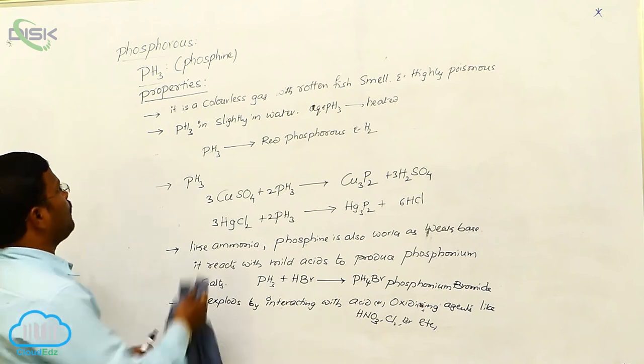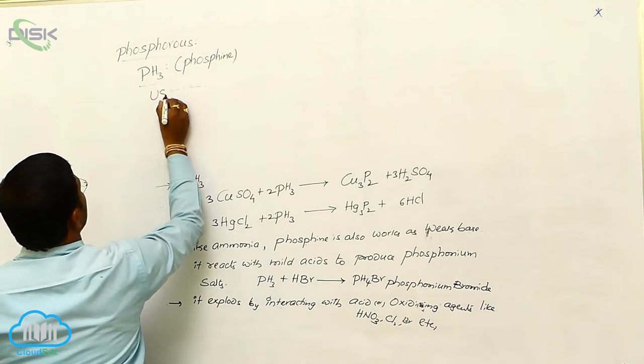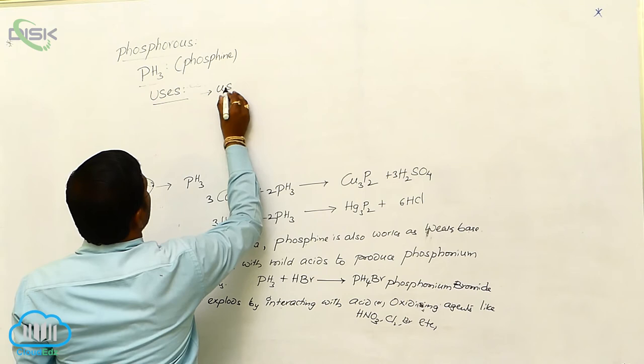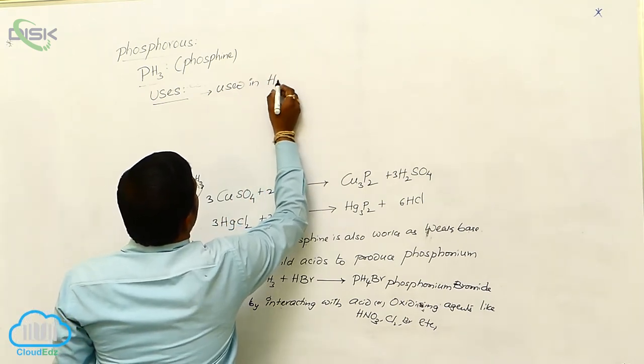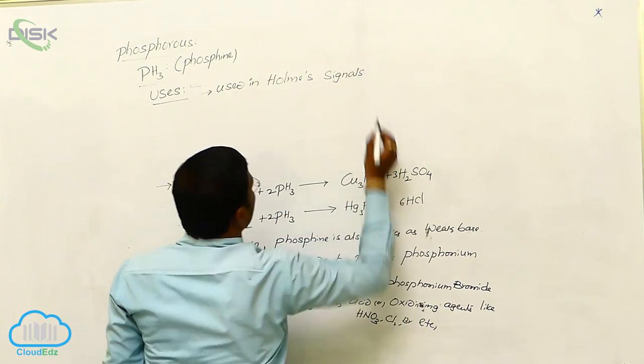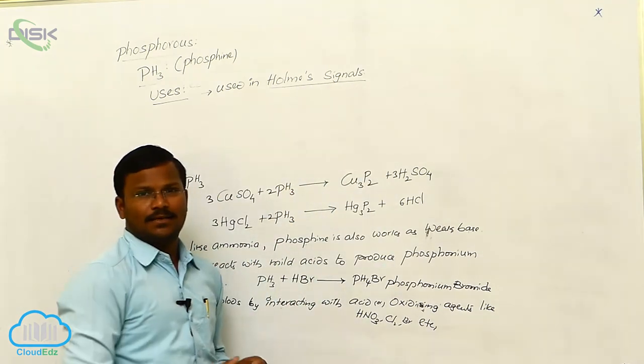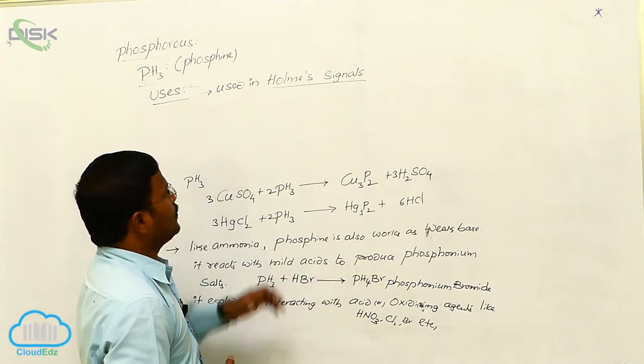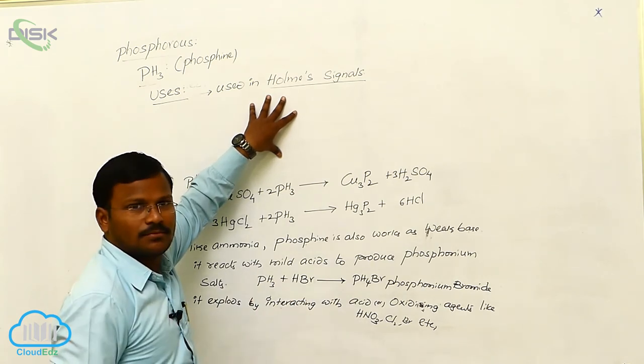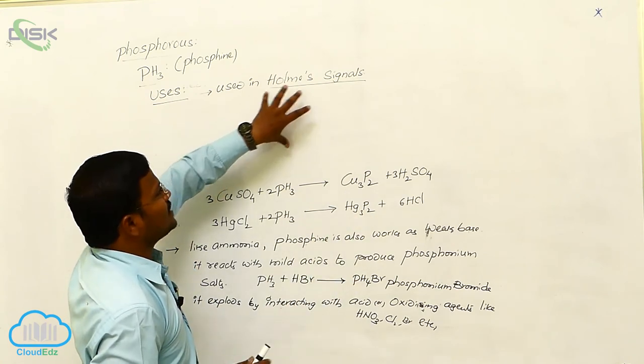Whereas, let us have uses of phosphine. What are the uses of phosphine? The most important application of phosphine is it is used in Holmes signals. What is Holmes signal? Generally, during a ship journey or ship carriage, goods carriage via ship, if there is any problem arises or accidental conditions arises, to produce a signal for the rest of the people, the Holmes signals helps us.